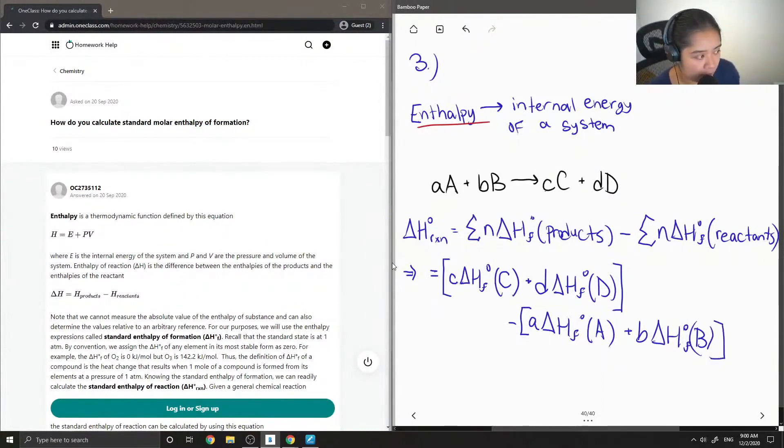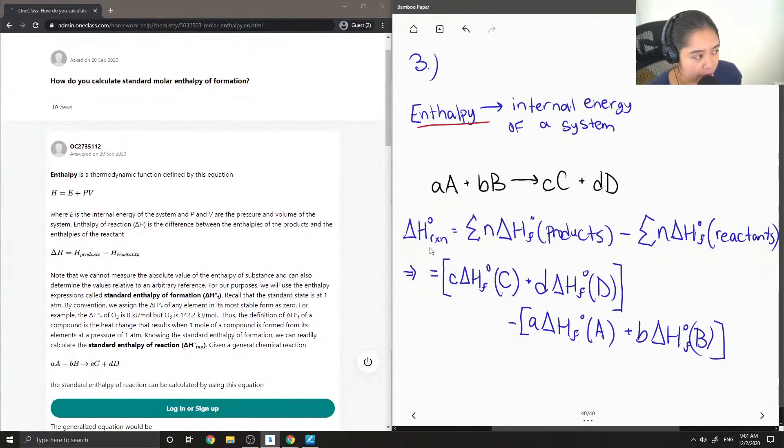So this is how you would calculate the standard molar enthalpy of formation. Generally in a question, they'll give you a balanced chemical reaction and the different delta H of formation for all of the products and reactants that are involved. And then from there, you are able to calculate the standard molar enthalpy of the reaction.